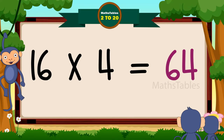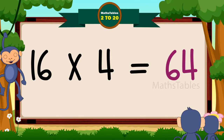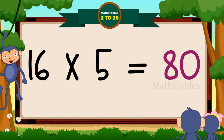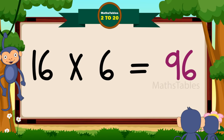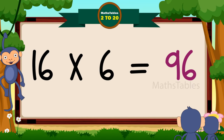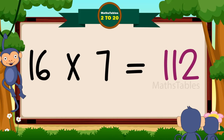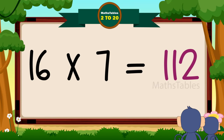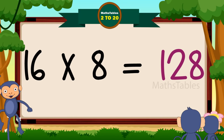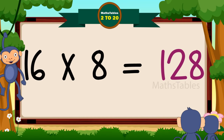16 fives are 80, 16 sixes are 96, 16 sevens are 112, 16 eights are 128.